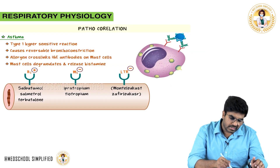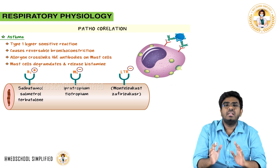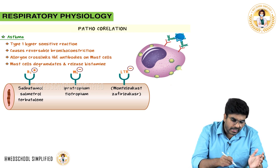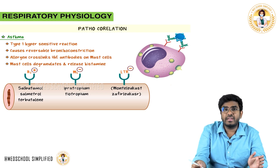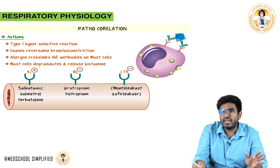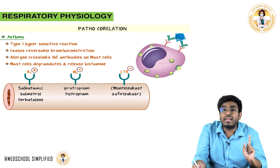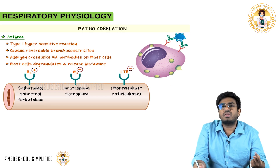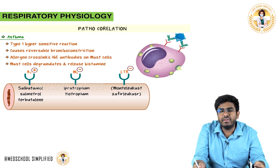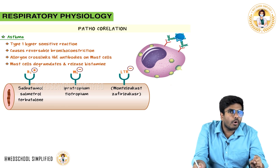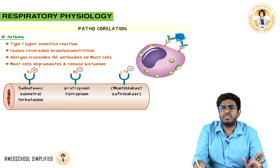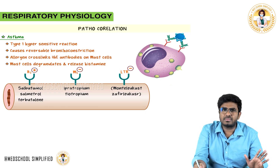Now let's discuss asthma. Asthma is a type-1 hypersensitivity reaction in which the patient suffers from reversible bronchoconstriction.